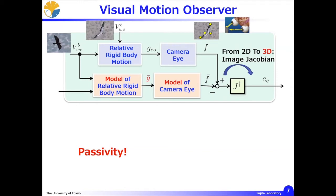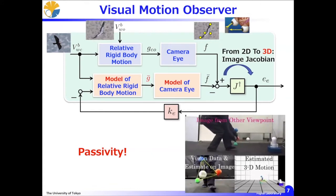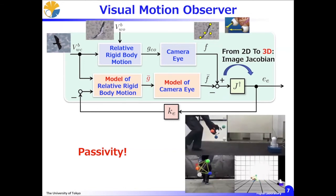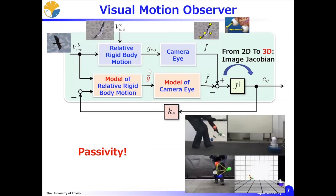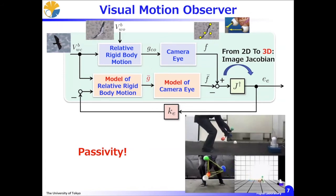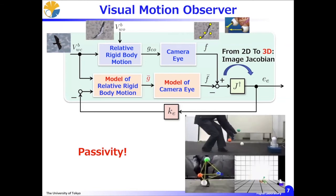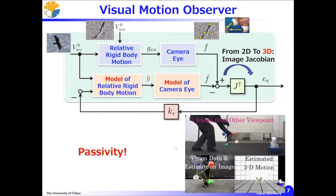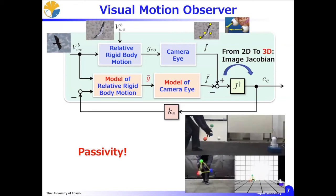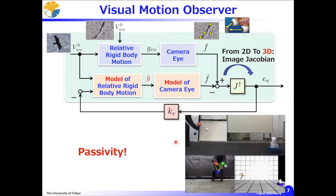Since it is passive, we can successfully close the loop with stability. Then we can get an estimated 3D relative rigid body motion information, Z-bar. It should be noted that this block diagram has the same structure as the state observer in modern control theory. So we will call this mechanism the visual motion observer. In this video clip, each colored ball represents visual features attached on the 3D rigid body. The visual motion observer provides us with the estimated 3D motion of the rigid body.